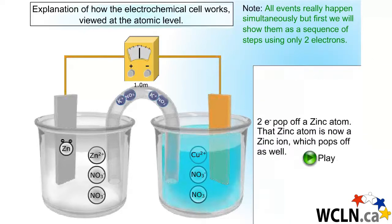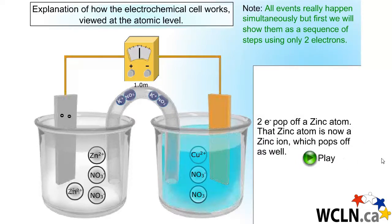Begin at the zinc electrode. A zinc atom will be oxidized. Two electrons will leave and go into the wire, and the zinc atom becomes a zinc ion, which leaves the strip and enters into the solution.